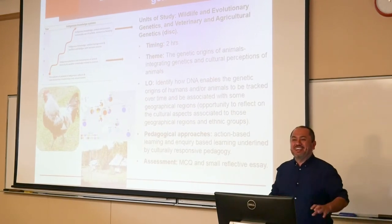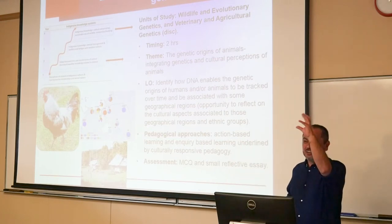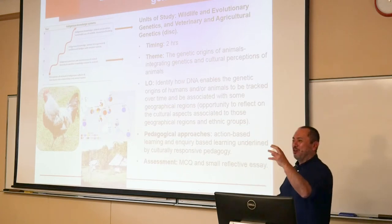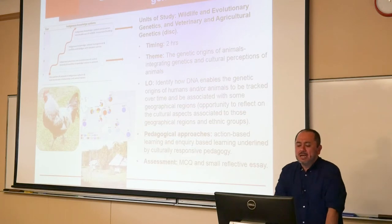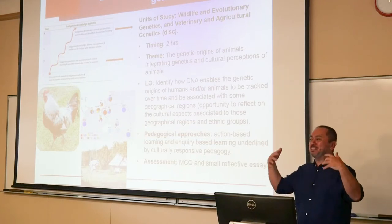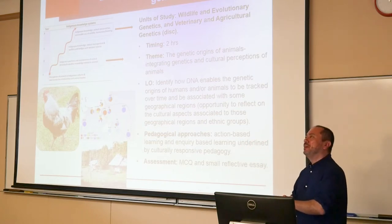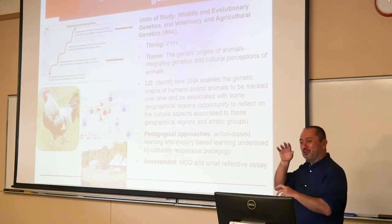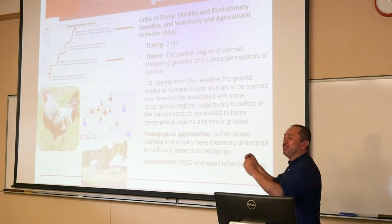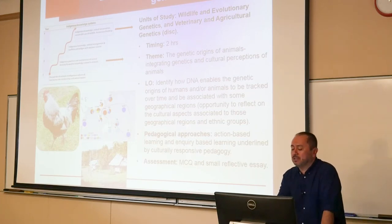The second case study is about how to bridge cultural competence with genetics — which is possibly the challenge some people may have in their own disciplines, whether it's physics, astronomy, or chemistry. Here it's with genetics. What we did, for instance, was discuss how genetics is used to assess the genetic and geographical origins of animals. Once we established that, we started reflecting about animal perceptions in different geographical areas. For example, since we are talking about chickens, people may think everyone has the same idea about chickens — but across cultures there are very different perceptions. We link that to cultural competence, work on cultural awareness, and use action-based and inquiry-based learning, multiple choice questions, and small reflective essays.